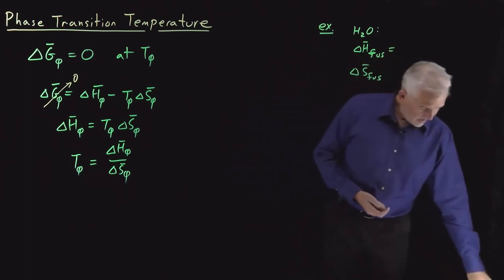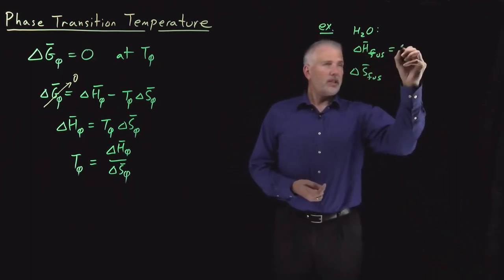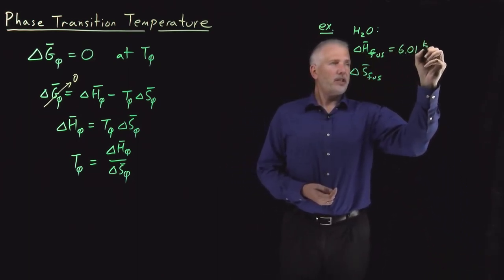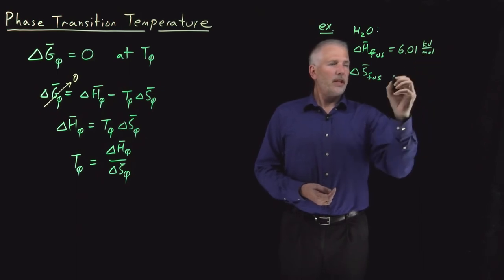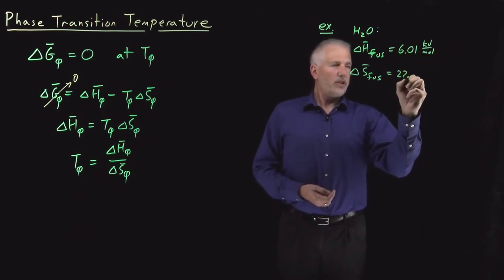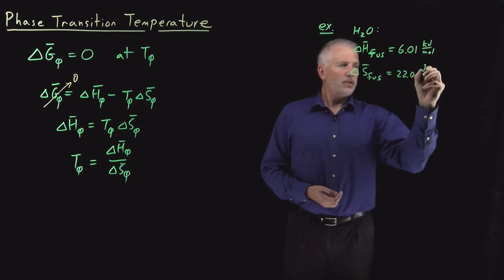We can look up the enthalpy and the entropy of melting or fusion. Those values, enthalpy of melting is about six kilojoules per mole, and the entropy is 22 joules per mole kelvin.